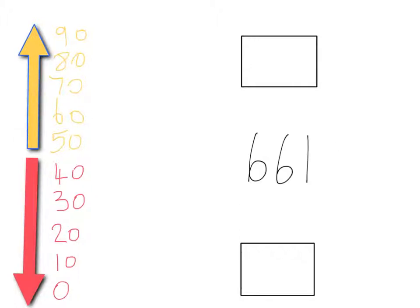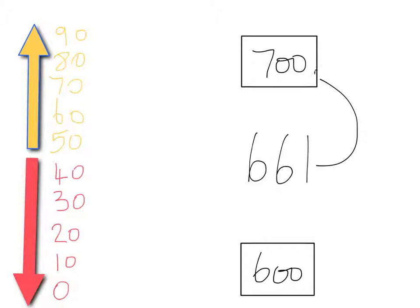We can also round six hundred and sixty-one to the nearest multiple of a hundred. Again, we determine which multiples of a hundred it lies between. Six hundred is the lower one and seven hundred is the upper one. And because it has sixty, we round sixty upwards. So six hundred and sixty-one to the nearest multiple of a hundred is seven hundred.